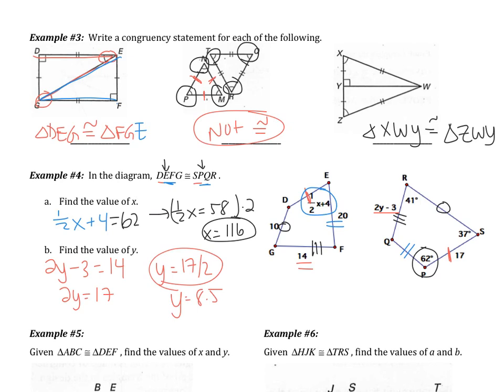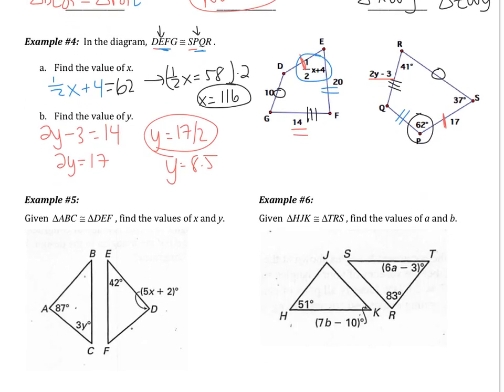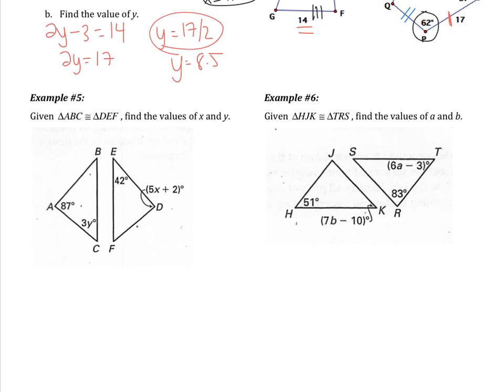This problem looks overwhelming at first, but it's important to identify all congruent parts — mark your congruent sides and angles. In example 5, triangle ABC is congruent to triangle DEF; find X and Y. Starting with X: angle D = 5X + 2, which is congruent to angle A = 87. So 5X + 2 = 87, giving 5X = 85 and X = 17.